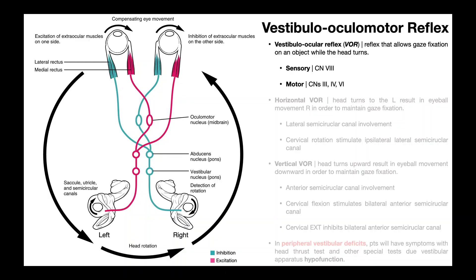In this video, we're going to be talking about the vestibuloocular motor reflex, or the VOR as it's often called. The VOR is a reflex that allows gaze fixation on an object while the head turns, and it involves four cranial nerves.